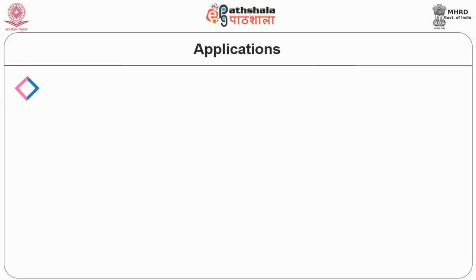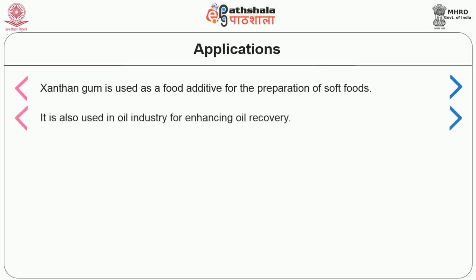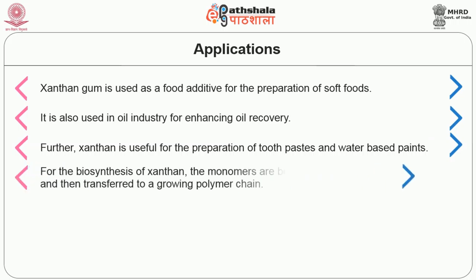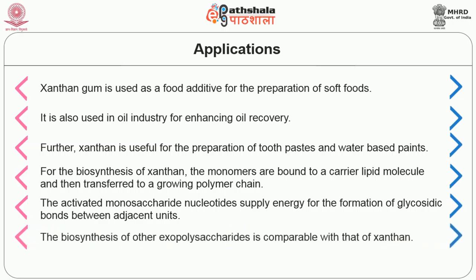Talking about the applications of xanthan gum, it is used as a food additive for the preparation of soft foods such as ice cream and cheese. It is also used in the oil industry for enhancing oil recovery. Further, xanthan is useful for the preparation of toothpaste and water-based paints. For the biosynthesis of xanthan, the monomers are bound to a carrier lipid molecule and then transferred to a growing polymer chain. The activated monosaccharide nucleotides, for example uridine diphosphate glucose (UDP-glucose), supply energy for the formation of glycosidic bonds between adjacent units. The biosynthesis of other exopolysaccharides is comparable with that of xanthan.